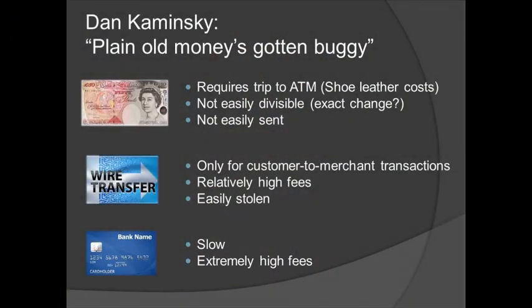Let me start by talking about regular money and why we need something to replace or improve it. As Dan Kaminsky recently wrote, money has gotten a little buggy — it's not doing everything we'd expect it to do anymore. If you think of cash, obtaining it requires going to the ATM, which economists call 'shoe leather costs.' Cash is not easily divisible — you're always out of exact change — and you cannot easily send it. If you want to send it to somebody in China, you'd have a hard time stuffing it in an envelope.